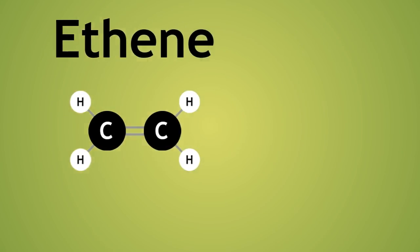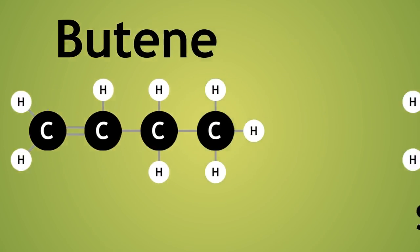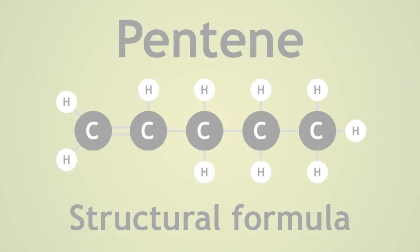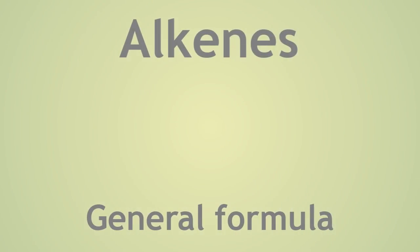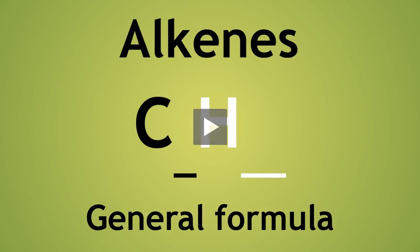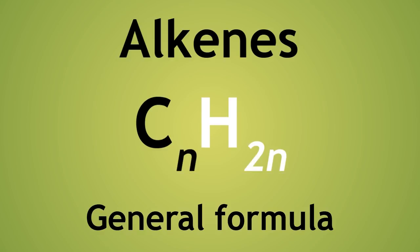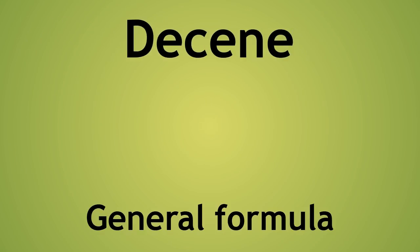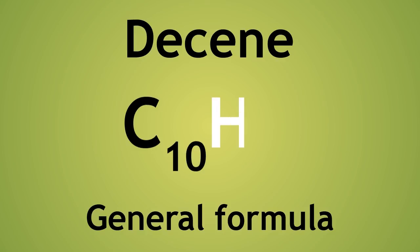Here are the structural formulas of the first 4 alkenes. Pause the video again and try to complete the general formula. What is the relationship between the number of carbons and the number of hydrogens? Hopefully, you got the formula CnH2n. Quite simply, there is double the number of hydrogens than the number of carbons. So as an example for decene, the molecular formula would be C10H20.